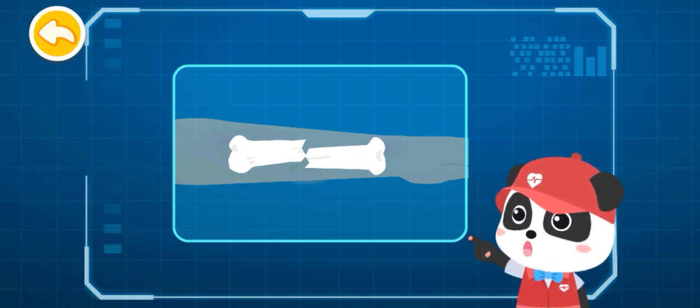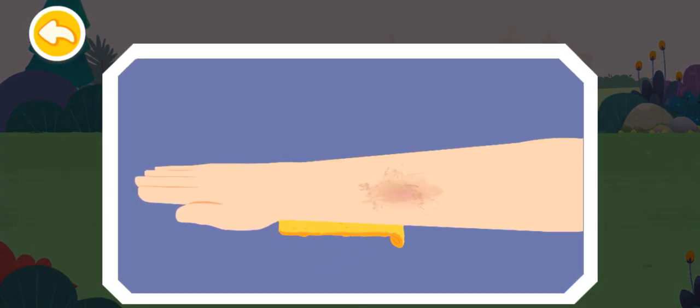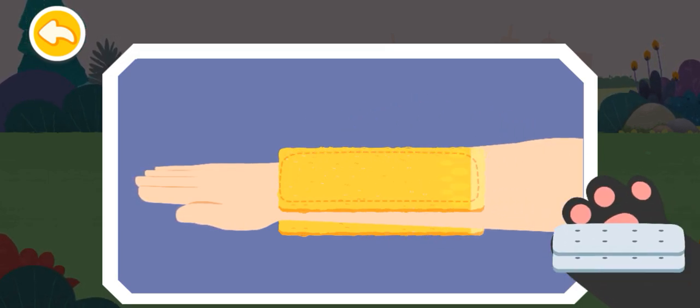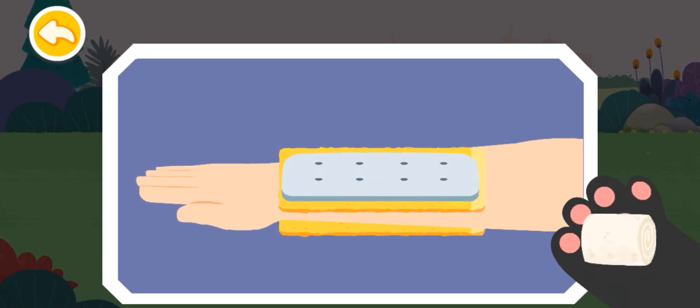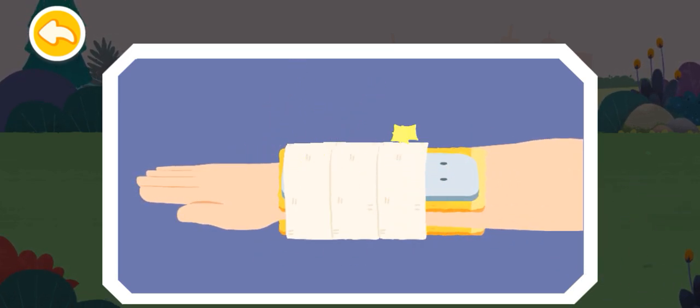For an open fracture, bandage it as a closed fracture before fixing the fracture. First, protect the arm with a soft cloth. Then, choose a magazine or similar splint. Finally, secure the arm with a bandage. Be careful not to wrap it too tightly.